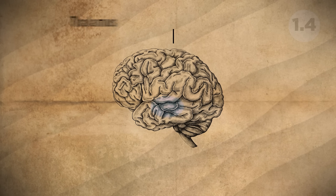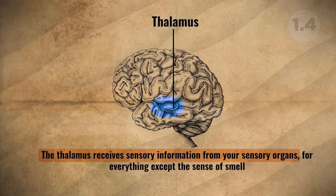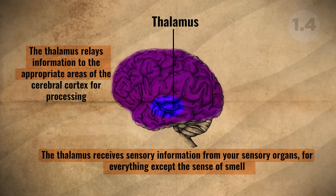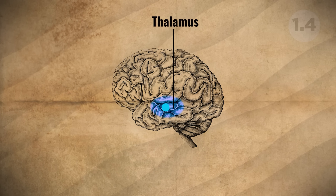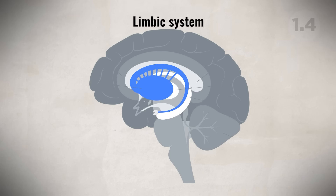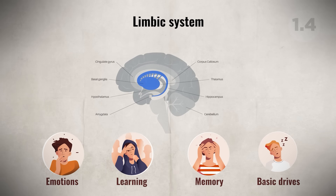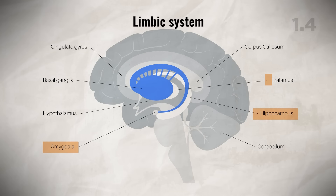The thalamus, located deep within the brain just above the brainstem, receives sensory information from all sensory organs except smell. It relays information to the appropriate areas of the cerebral cortex for processing — this is why it's often called a relay station. Located around the thalamus is the limbic system, made up of different brain structures whose main function involves emotions, learning, memory, and some basic drives. This includes structures we've already discussed: the amygdala, the hippocampus, and the thalamus.